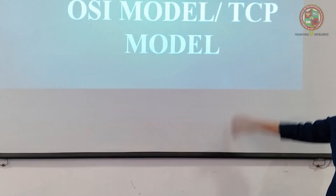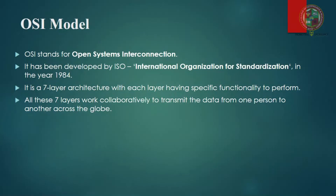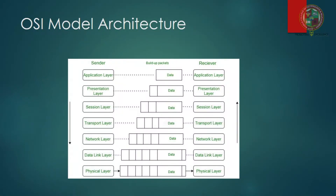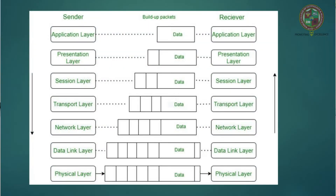The OSI model, as we know, stands for Open System Interconnection. It was developed by ISO in 1984. The OSI model has seven layers, and all layers have their different protocols and aspects to communicate and transfer data from one person to another globally.